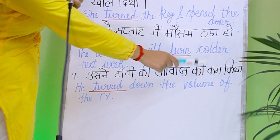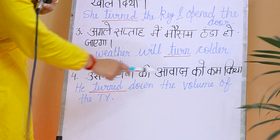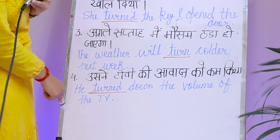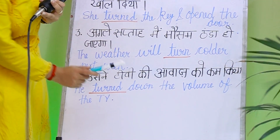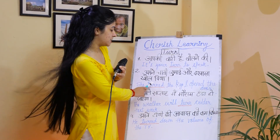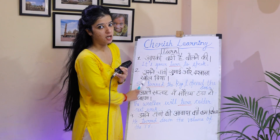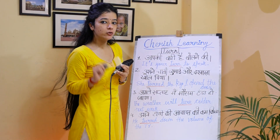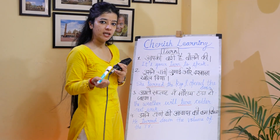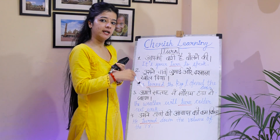Next sentence — he reduced the sound of the TV. In English: 'He turned down the volume of the TV.' Here we have used the past form, turned. If you have any confusion about simple past tense, watch the previous video for practice.